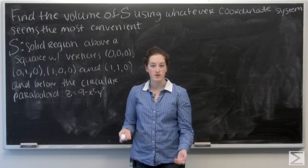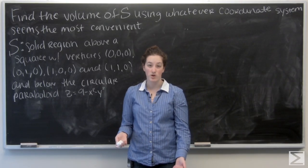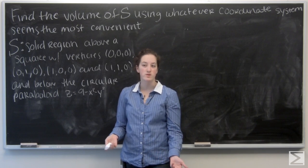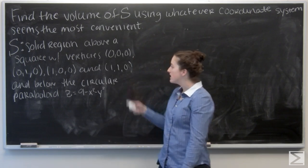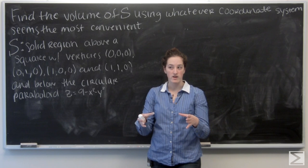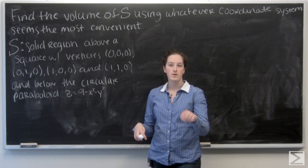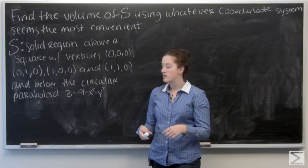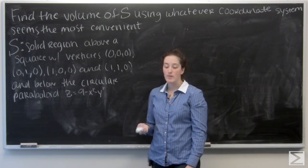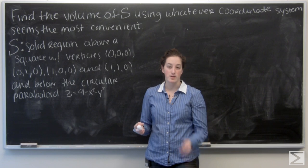For this problem, we're given a solid region S, and we're asked to calculate its volume using whatever coordinates are most convenient. S is a solid region above a square in the xy-plane, with vertices (0,0), (0,1), (1,0), and (1,1), and below the circular paraboloid z = 9 - x² - y².